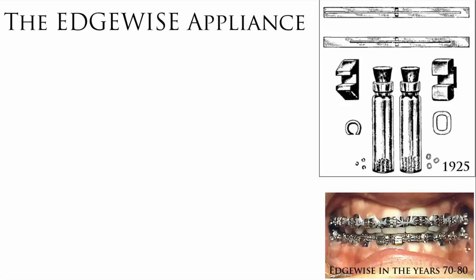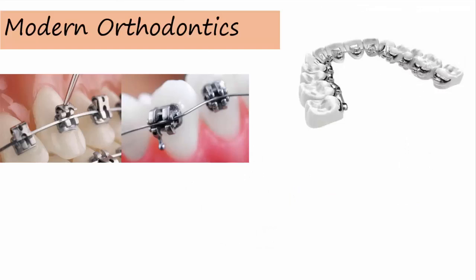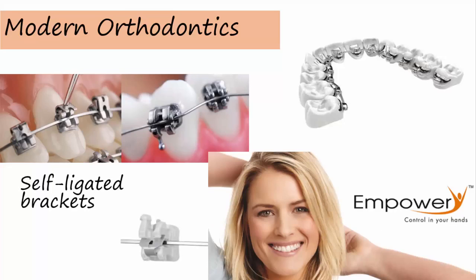Angle managed to obtain control of tooth movement in the three spatial planes. It's important to remember that the edgewise appliance got its name because its action is effective on the edge of the rectangular arch wire. Nowadays, we do not have to bandage all teeth, brackets are transparent, and we do not have to tie the arch wires — but the system is essentially the same. The prescriptions change; there are hundreds of them. But the essence of fixed appliance is the same.